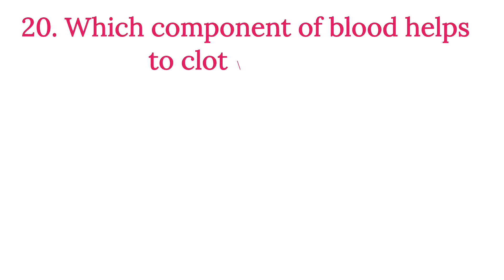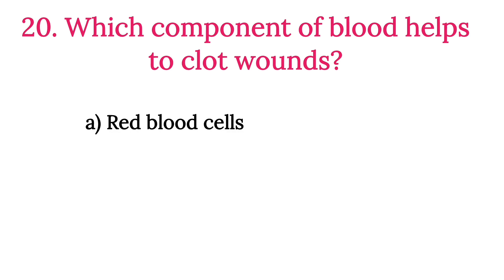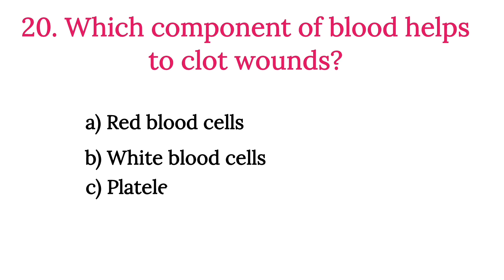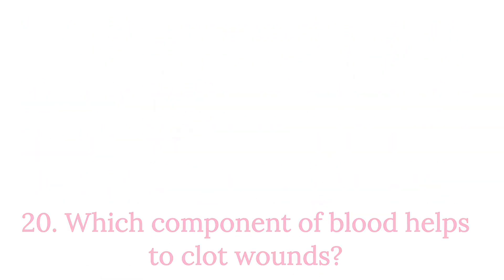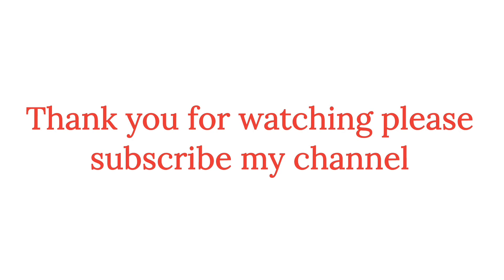MCQ Number 20: Which component of blood helps to clot a wound? Option A: Red blood cells. Option B: White blood cells. Option C: Platelets. Option D: Plasma. The correct option is Option C, Platelets. Thank you for watching — please subscribe to my channel for more medical related information.